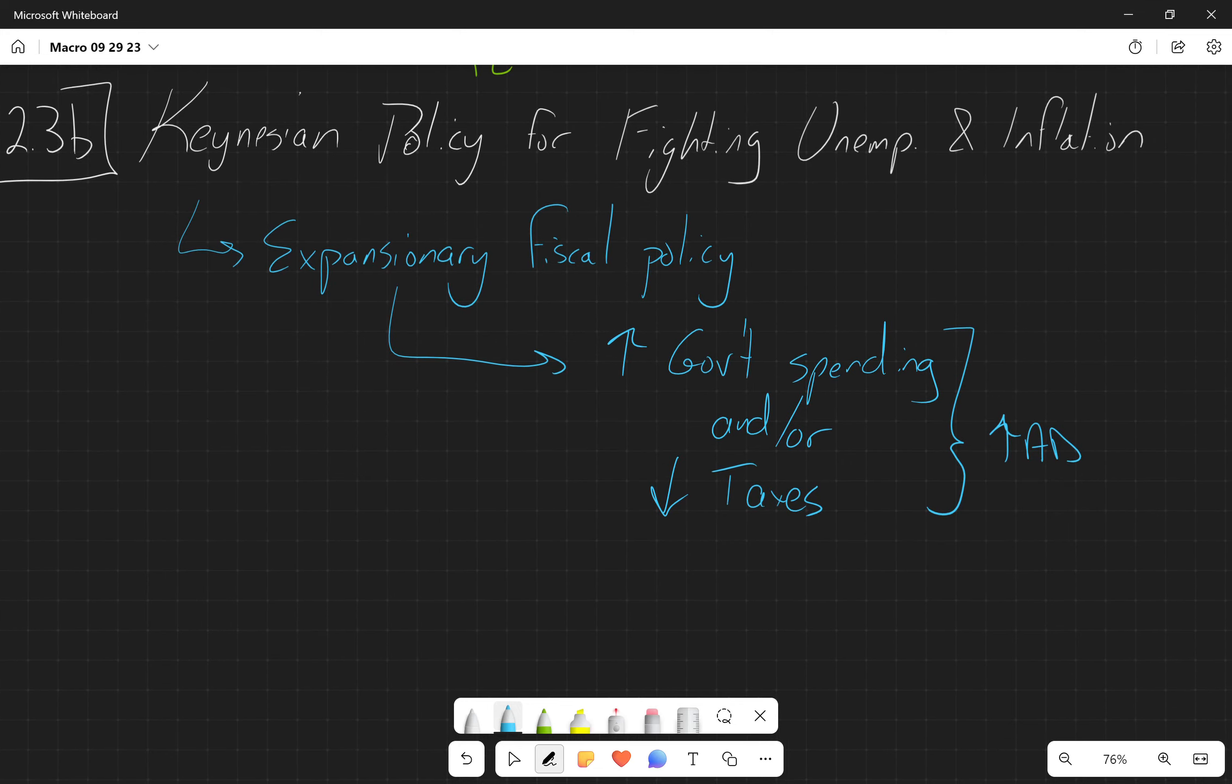Now, part of the Keynesian doctrine that has never been followed, which is part of why we talk about the different zones—once we get closer to full employment, all the Keynesian policies and thoughts go out the window. And part of that is the fact that nobody wants to be the person to take the punch bowl away from the party.